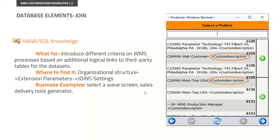This is a slightly different example, because the join setting on the delivery node generator is not about adding extra information to a screen — it is going to determine the behavior for grouping the sales delivery nodes.